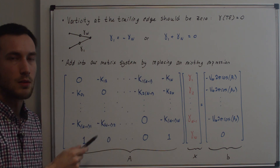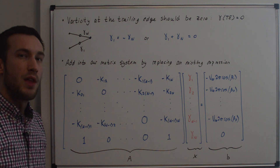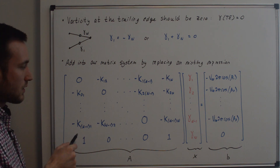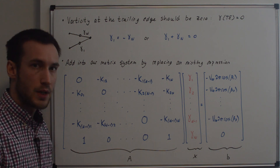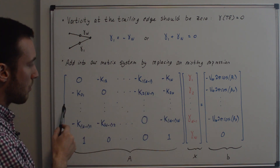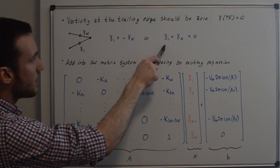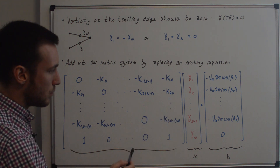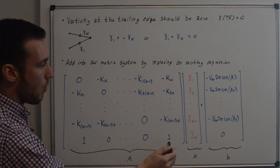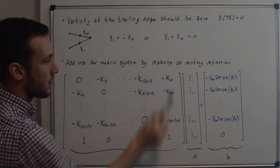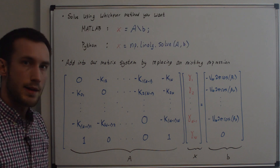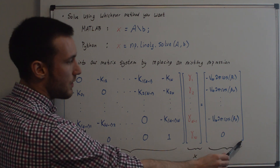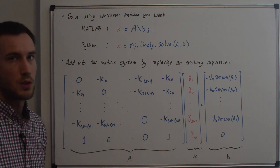Based on the schematic with the first panel and the nth panel having strengths gamma_1 and gamma_n, we write the Kutta condition as gamma_1 plus gamma_n equals 0. Adding this to our existing system would give an over-constrained system with n unknowns but n plus 1 equations. Instead, we replace the last equation in the matrix. In the last row: coefficient 1 for gamma_1, zeros for all middle terms, and coefficient 1 for gamma_n, all equal to 0. Now with the final system — matrix A, unknown array x, and right-hand side b — we can solve using MATLAB's x = A\b or Python's np.linalg.solve(A, b).